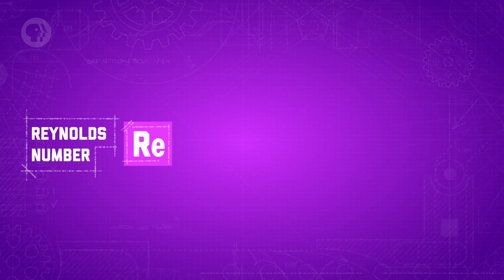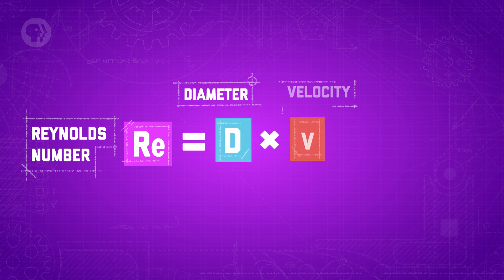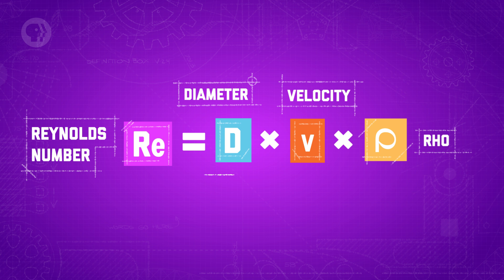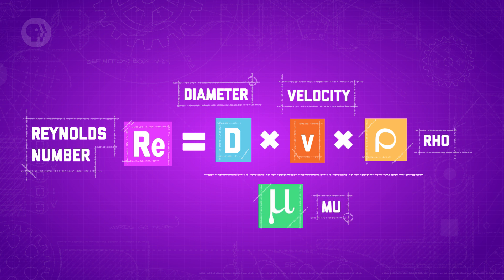Reynolds' experiment allowed him to determine when the transition would occur from laminar to turbulent, giving us the quantity we now know as the Reynolds number. We can find the Reynolds number for the flow of a fluid in a pipe by taking the diameter of the pipe and multiplying it by the velocity of the fluid and the density of the fluid, then dividing all of that by the viscosity of the fluid. The value we get for our Reynolds number will be dimensionless, meaning there are no units attached to it, but it can tell us a lot about the movement of a fluid — specifically, how predictable or chaotic our fluid flow will be.